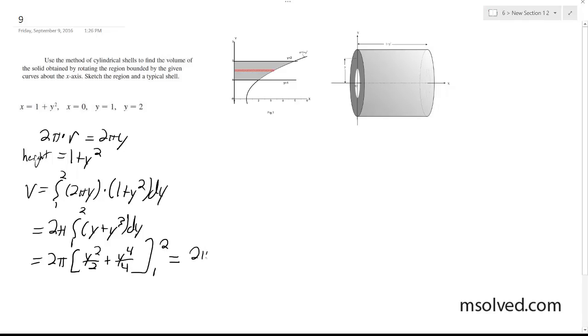We get 2 pi times 2 plus 4 minus 1 half plus 1 fourth.